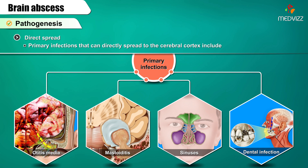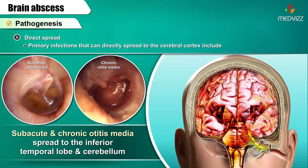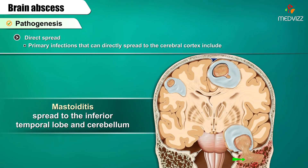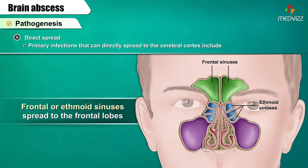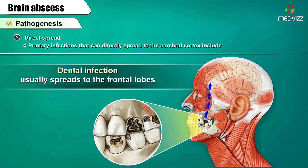Primary infections that can directly spread to the cerebral cortex include: subacute and chronic otitis media and mastoiditis spreading to the inferior temporal lobe and cerebellum; frontal or ethmoid sinuses spreading to the frontal lobes; and dental infection, which usually spreads to the frontal lobes.